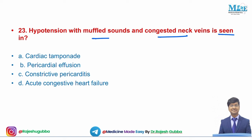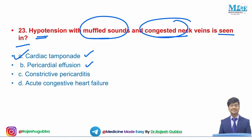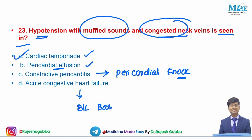Next question: hypotension with muffled heart sounds and congested neck veins is seen in — cardiac tamponade, pericardial effusion, constrictive pericarditis, or acute congestive heart failure. Muffled heart sounds can occur in both tamponade and pericardial effusion, but hypotension with congested neck veins is specific to cardiac tamponade. Pericardial effusion lacks hypotension and congested neck veins. Constrictive pericarditis has an additional pericardial knock. Congestive heart failure shows bilateral basal fine crepitations. The answer is cardiac tamponade.